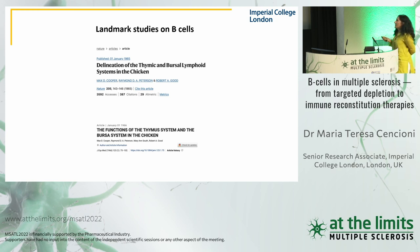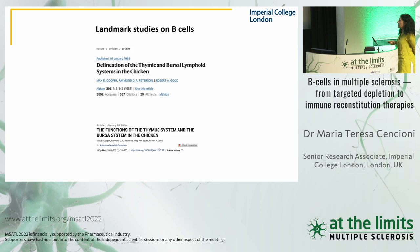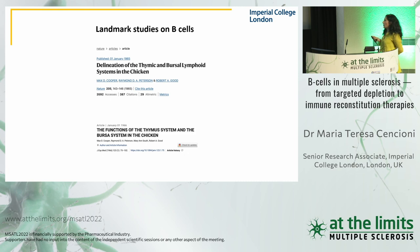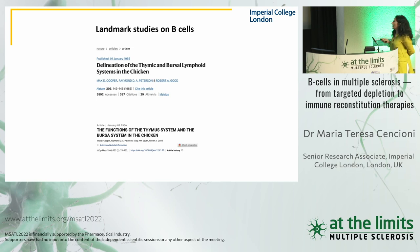The landmark studies that led to the discovery of B cells started with two publications in 1965 in Nature and 1966 in the Journal of Experimental Medicine. Working with the chicken, Max Cooper and Robert Good, with the collaboration of Raymond Peterson, demonstrated for the first time that the cells developed in the bursa are able to produce antibody.